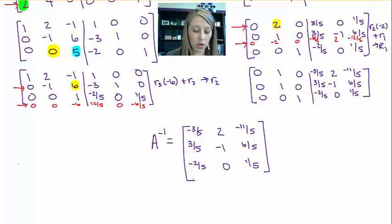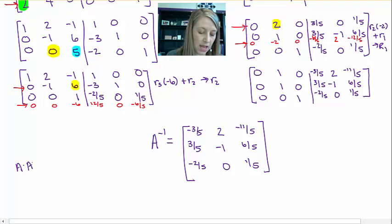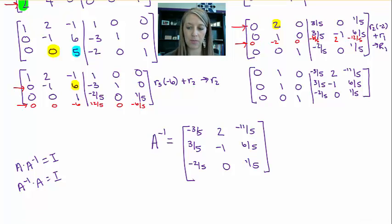And you can always confirm your answer by taking A times A inverse to make sure you end up with the identity matrix. And of course, to do it the opposite way around. Or again, if you hold on to the last video here, I'll show you how to double-check these on your graphing calculator.